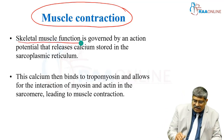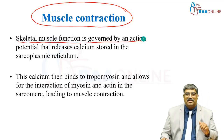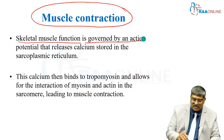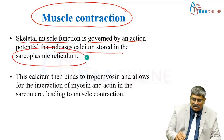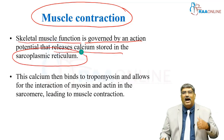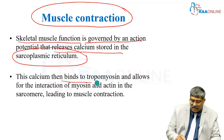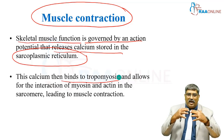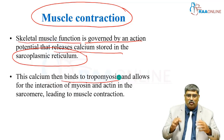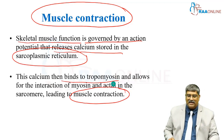The skeletal muscle function is governed by action potential. Once an action potential comes, calcium is released from the sarcoplasmic reticulum. This released calcium binds to tropomyosin and helps in the interaction of myosin and actin in the sarcomere, leading to muscle contraction.